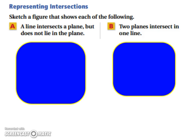Sketch a figure that shows each of the following. A line intersects a plane but does not lie on the plane. And the second one is, two planes intersect in one line.